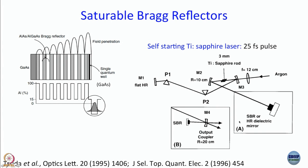This is a self-starting Ti:sapphire laser. Once again there are two different cavity designs, but the crux is that the saturable Bragg reflector is used as one of the mirrors. The pulse width is 25 femtoseconds. Ti:sapphire itself gets mode locked by Kerr lens mode locking (KLM), and by introducing a saturable absorber, the output is as good as it gets. In most modern compact self-starting Ti:sapphire lasers, this technology is used.